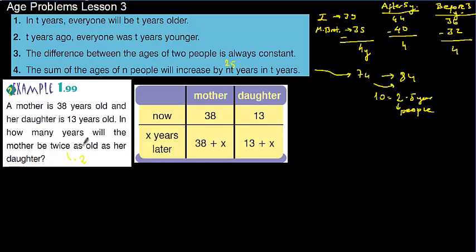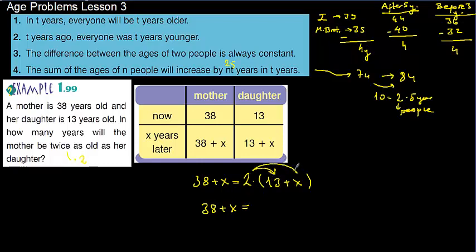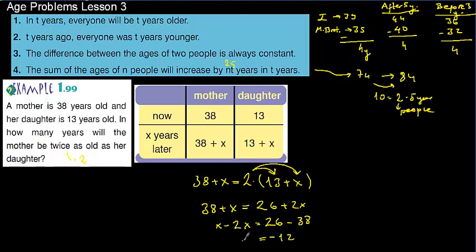It says the mother's age is twice the daughter's age. So 38 plus x should be equal to 2 times (13 plus x). Distributing: 26 plus 2x. Getting terms to one side: x minus 2x equals 26 minus 38, which is minus 12. x minus 2x equals minus x. Both sides have a minus sign, so multiplying by minus 1, x is equal to 12.